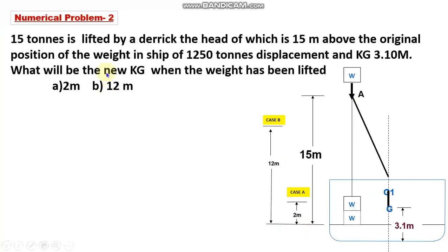So allow me to discuss the question. It is said that 15 tons is lifted by derrick, the head of which is 15 meters above the original position of the weight in a ship of 1250 tons. What will be the new KG when the weight has been lifted? First subdivision is to a distance of 2 meters and second subdivision is to a height of 12 meters.